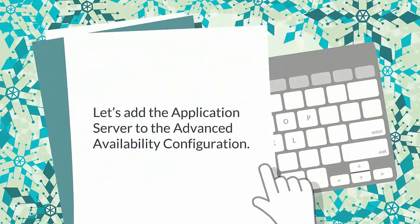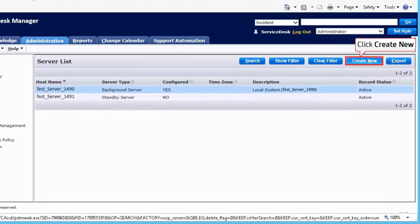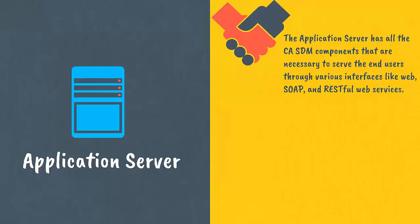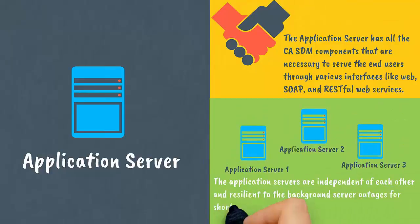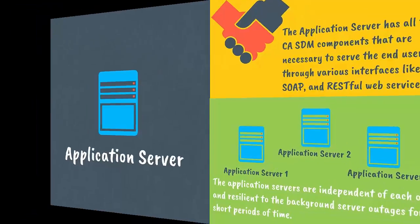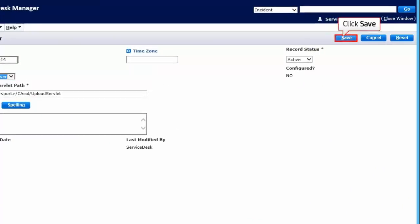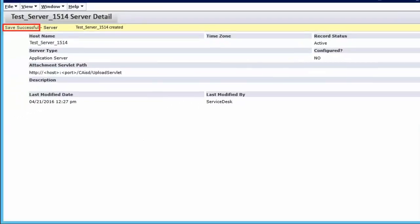Now let us add the application server to the advanced availability configuration. Click Create New to add the application server. The application server has all the CASDM components necessary to serve end users through various interfaces including web, SOAP, and RESTful web services. Application servers are independent of each other and resilient to background server outages for short periods of time. Provide the hostname and server type, then click Save.